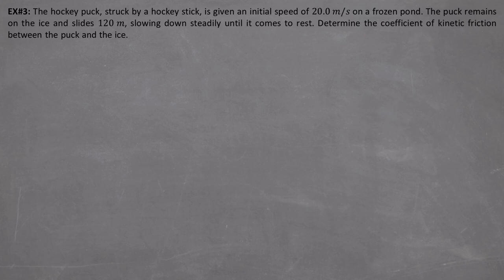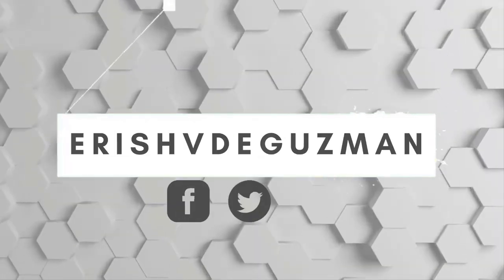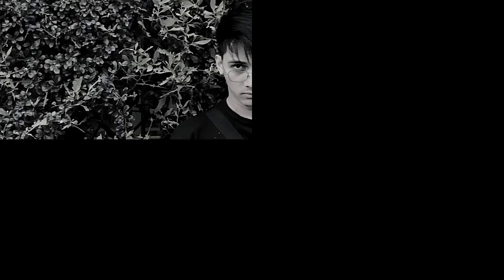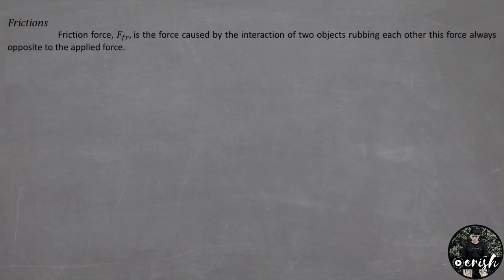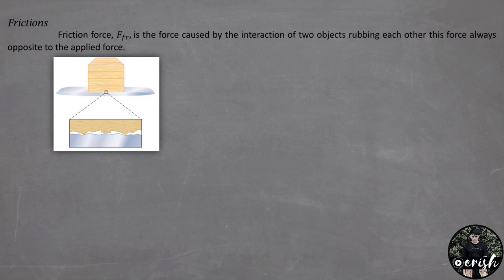Friction force, or F sub R, is the force caused by the interaction of two objects rubbing each other. This force always opposes the applied force. From our previous lectures, we assumed all surfaces are smooth and that objects slide without resistance. However, no surface is perfectly smooth. At the atomic level, even the smoothest surface is actually rough and jagged. To slide one surface across another requires a force large enough to overcome the roughness.